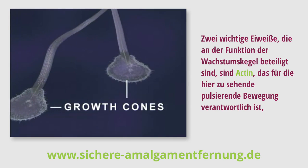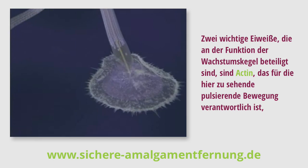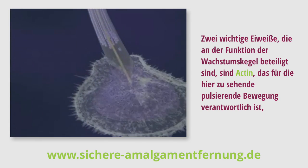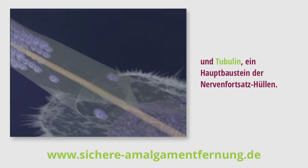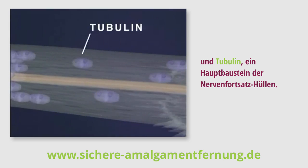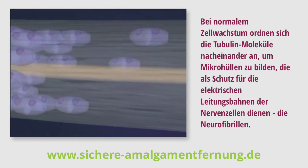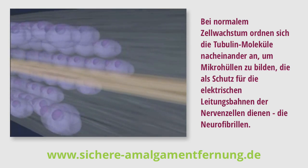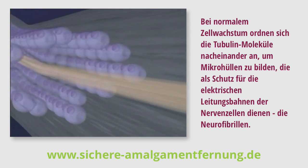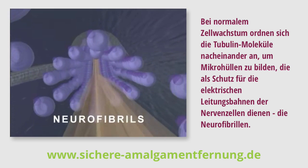Two principal proteins involved in growth cone function are actin, which is responsible for the pulsating motion seen here, and tubulin, a major structural component of the neurite membrane. During normal cell growth, tubulin molecules link together end-to-end to form microtubules, which in turn act as a protective sheath surrounding the cell's electrical conduits, the neurofibrils.